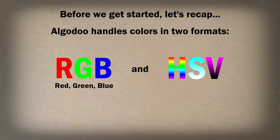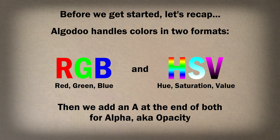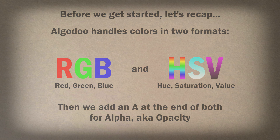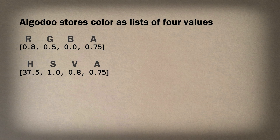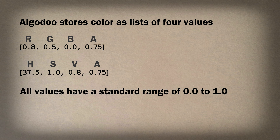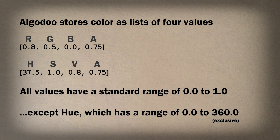Red, Green, and Blue, and Hue Saturation Value. Then we just add an A at the end of both for Alpha, also known as Opacity. Algodoo stores color as lists of four values, as shown here. All values have a standard range of 0 to 1, except Hue, which has a range of 0 to 360.